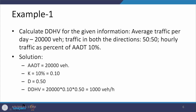In this example, average traffic per day is 20,000 vehicles, the traffic split in both directions is 50-50, and traffic as a percent of AADT is 10 percent. So AADT is 20,000, K is 0.1, and D is 0.5. Multiplying all these gives DDHV of 1,000 vehicles per hour. The facility to be designed must accommodate this value of 1,000 vehicles per hour.